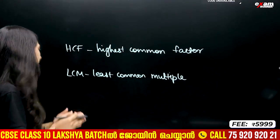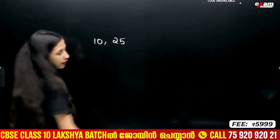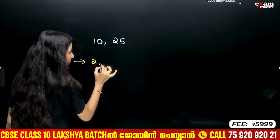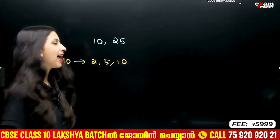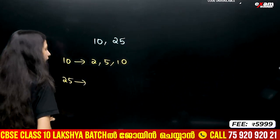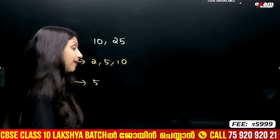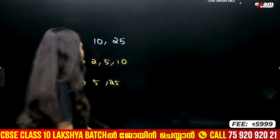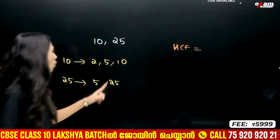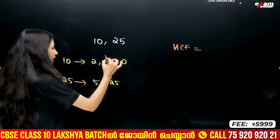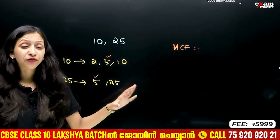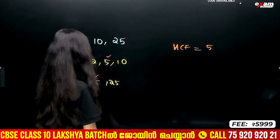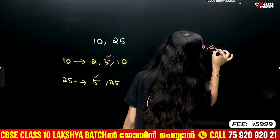For example, we have 10 and 25. We know that 10 has factors 2 and 5, and 25 has factors 5 squared. Now, HCF is the Highest Common Factor. The common factor is 5. So HCF of 10 and 25 is 5.